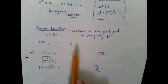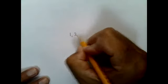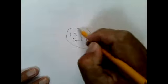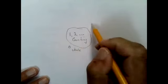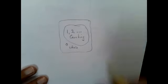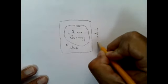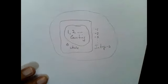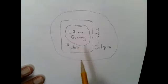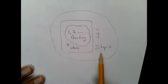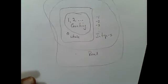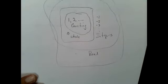Somewhere along the line in fifth grade, you made a poster showing the number system: counting numbers, then whole numbers by adding zero, then integers by adding their opposites. Then you added all the decimals and got the real numbers. You had a great chart of all the different number groups — maybe they stopped doing that, but there was a time everybody did it.